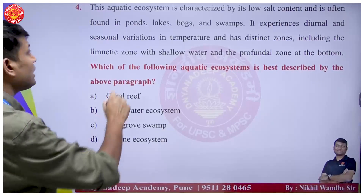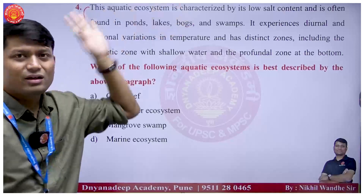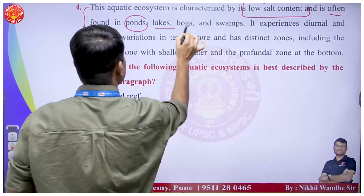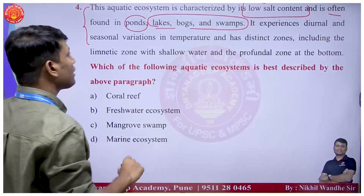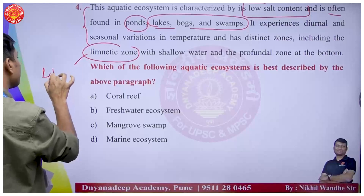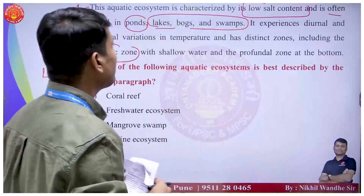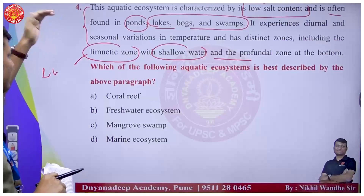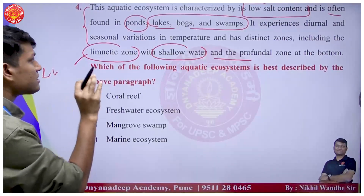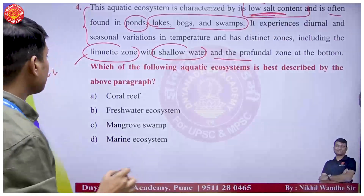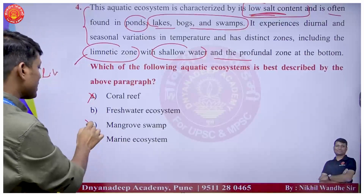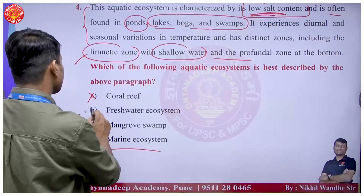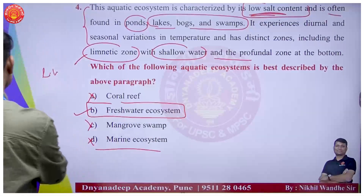For the ecosystem description with low salt content - coral reefs are not a low salt content ecosystem, mangroves are also not low salt content, and marine ecosystems also don't qualify. The limnetic zone is the zone in a freshwater body where sunlight can reach. For option B, fresh water ecosystem is the correct answer here.